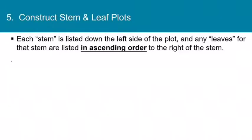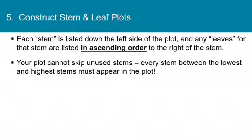Each stem is listed down the left side of the plot, and then any leaves for that stem will be listed in ascending order to the right of the stem. Your plot cannot skip unused stems. For example, if your data contains 50s and 70s but no 60s, you still need to have a line for the stem of 6. Every stem between the lowest and the highest must appear in the plot, just like when you make a histogram, you can't skip classes that are empty.